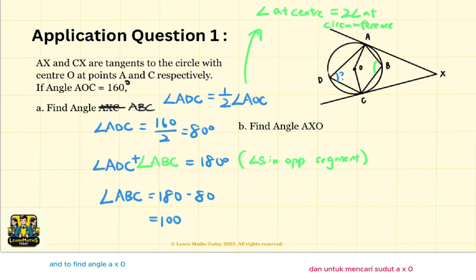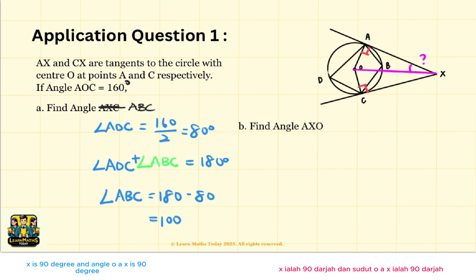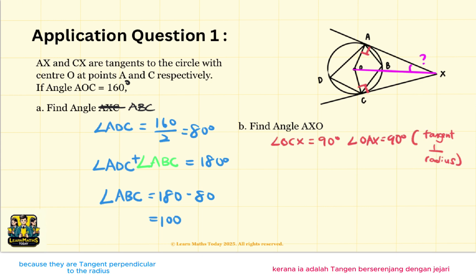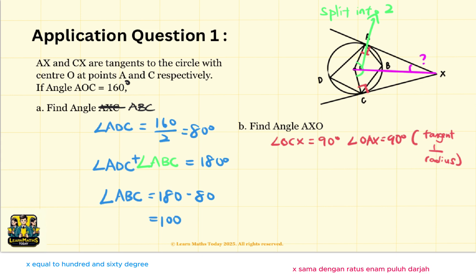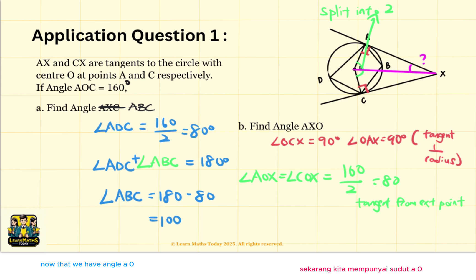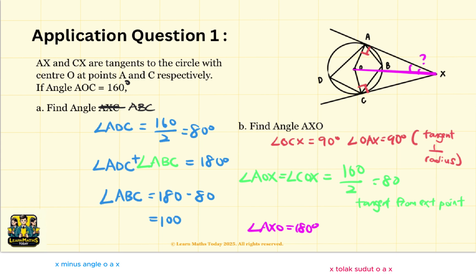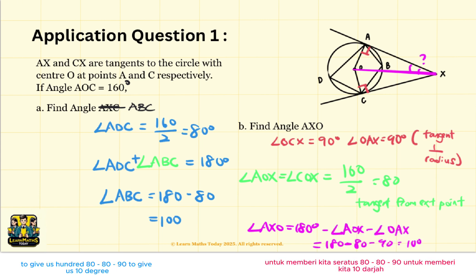To find angle AXO, let's first find angle OCX. We know that angle OCX is 90 degrees and angle OAX is 90 degrees, because tangents are perpendicular to the radius. Also, angle AOX equals angle COX, which equals 160 divided by 2, equal to 80 degrees, because they are tangents from an external point. Now that we have angle AOX and angle OAX, we can find angle AXO because the sum of angles in a triangle is 180 degrees.